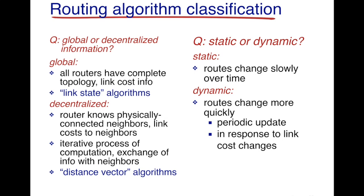The second question is whether a routing algorithm is static or dynamic. In reality all algorithms will have some level of dynamicity — they change over time. But when we say a routing algorithm is static, it means the routes change slowly over time. In comparison, a dynamic routing algorithm changes much more quickly: periodically the link costs are updated, and based on these changes the algorithm computes new routes to different destinations. With this we will conclude this lecture, and in the next lecture we will talk about Dijkstra's algorithm.